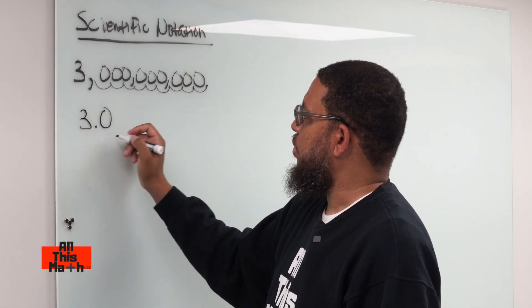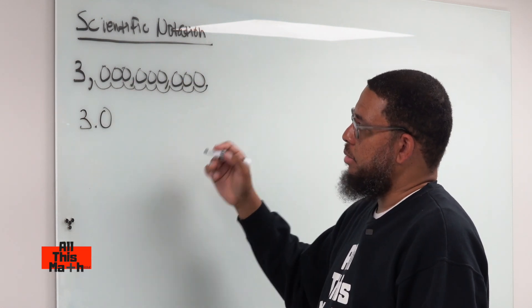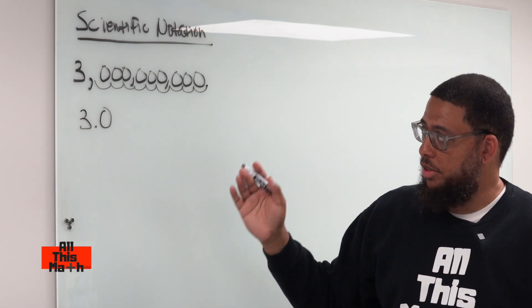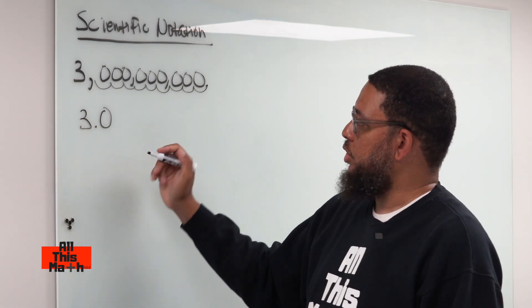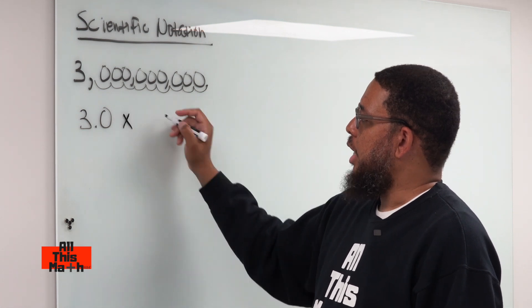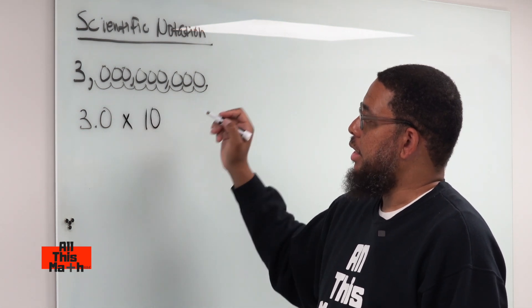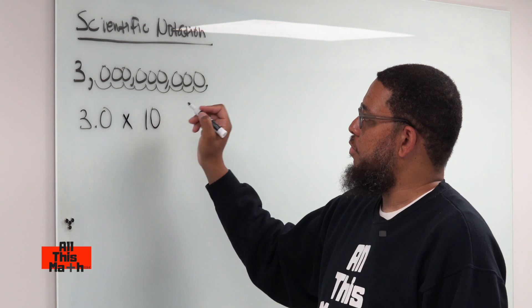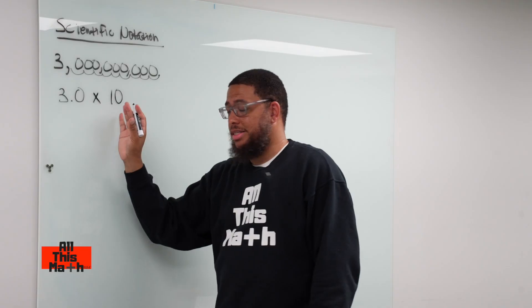I've created three point zero and all these extra zeros don't really matter because if they're after the decimal point, they're not really relevant. So now I've created a number three point zero. Now in scientific notation, we then write a multiplication sign and we write a ten. And then the question is, what exponent is this ten going to have?